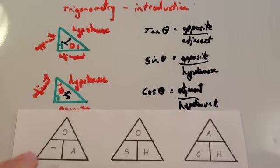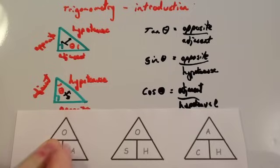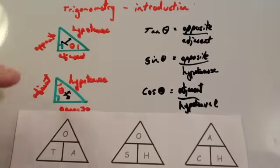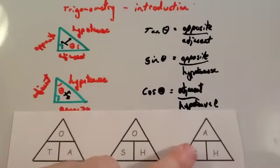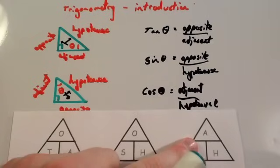So, if you wanted to work out the tan theta, you would cover up the tan and you would do opposite divided by adjacent, a bit like the speed-distance triangles. If you wanted to work out sin, you would do opposite divided by hypotenuse. And if you wanted to work out the cos theta, you would do adjacent divided by hypotenuse.